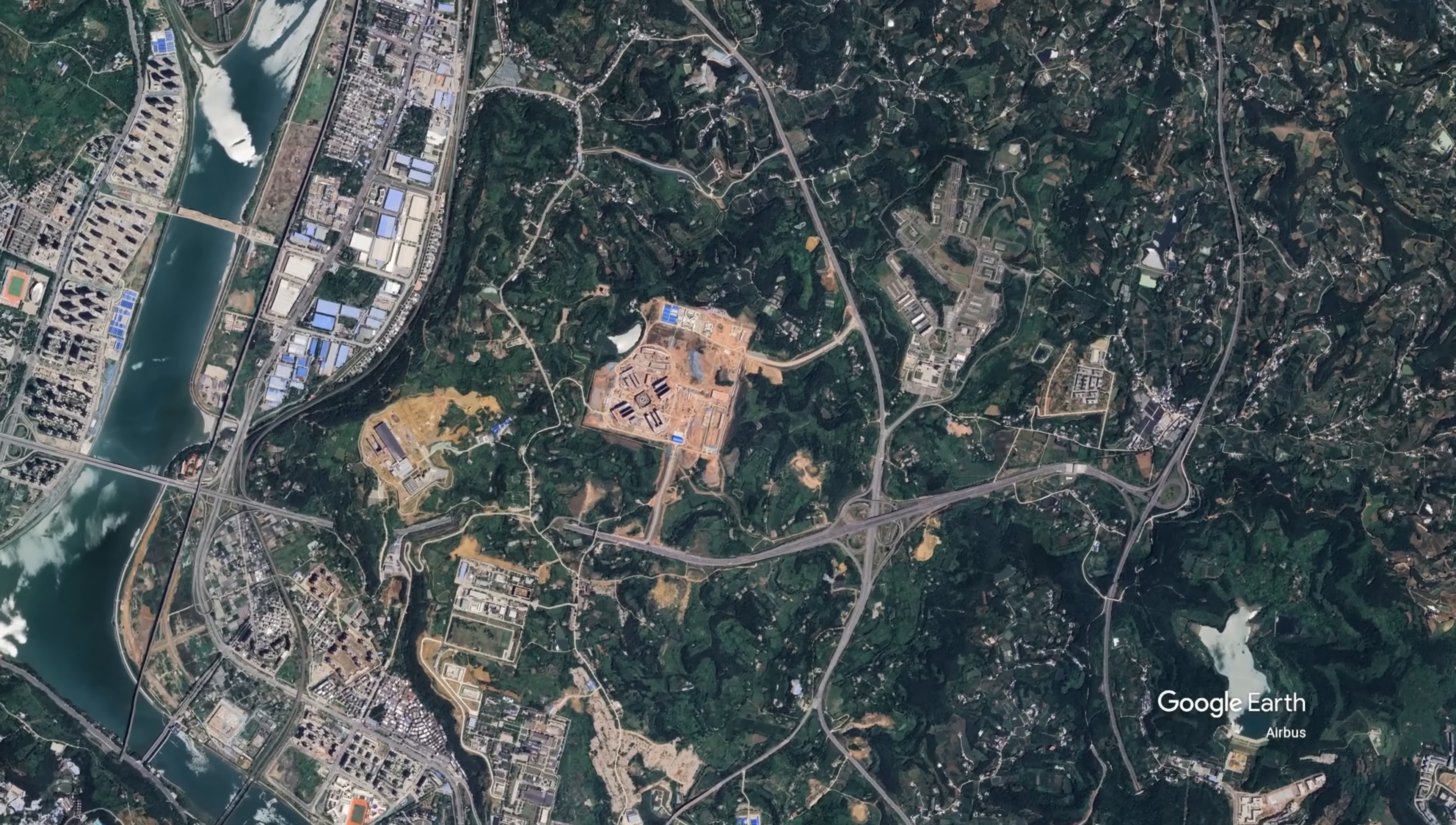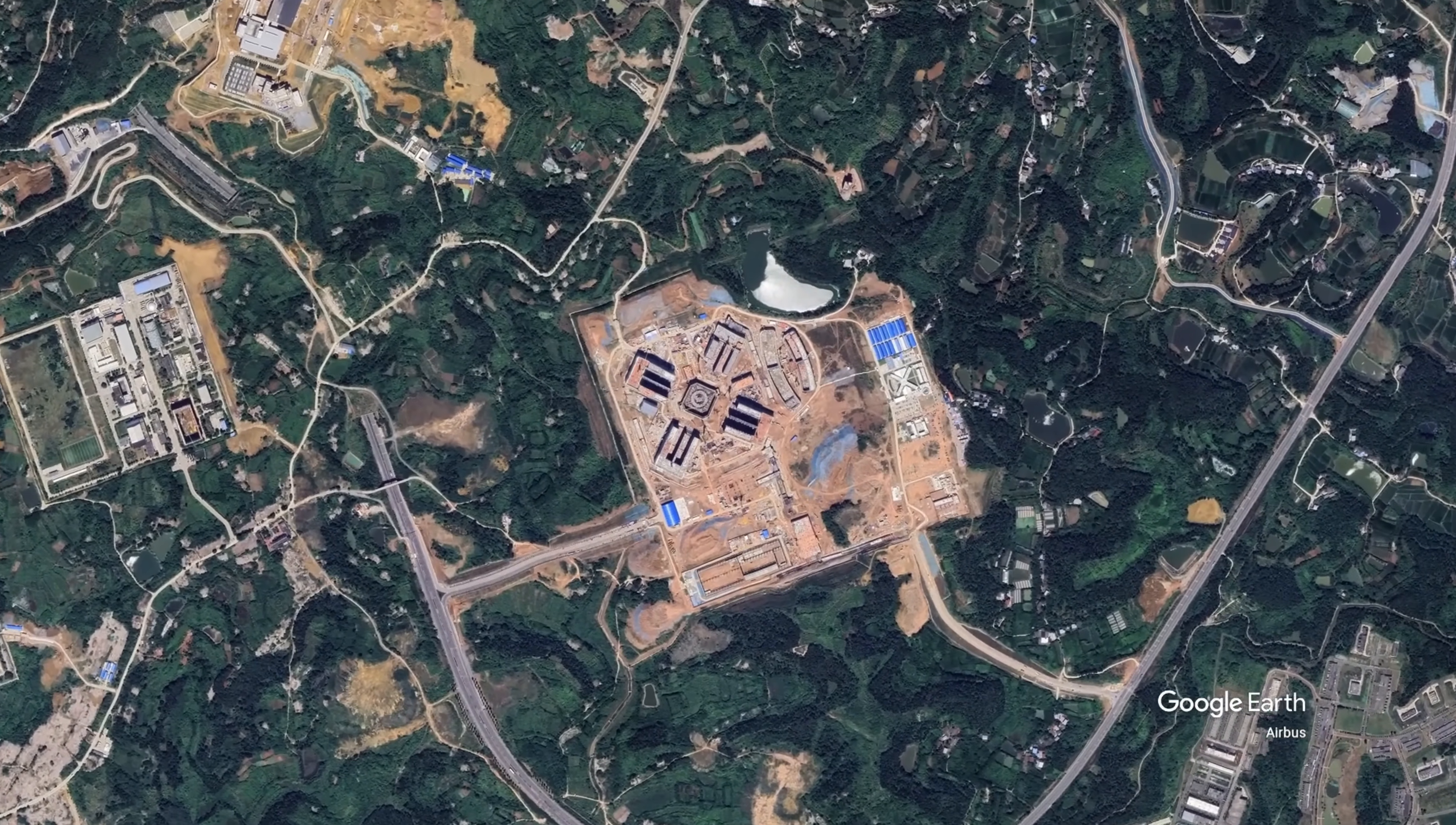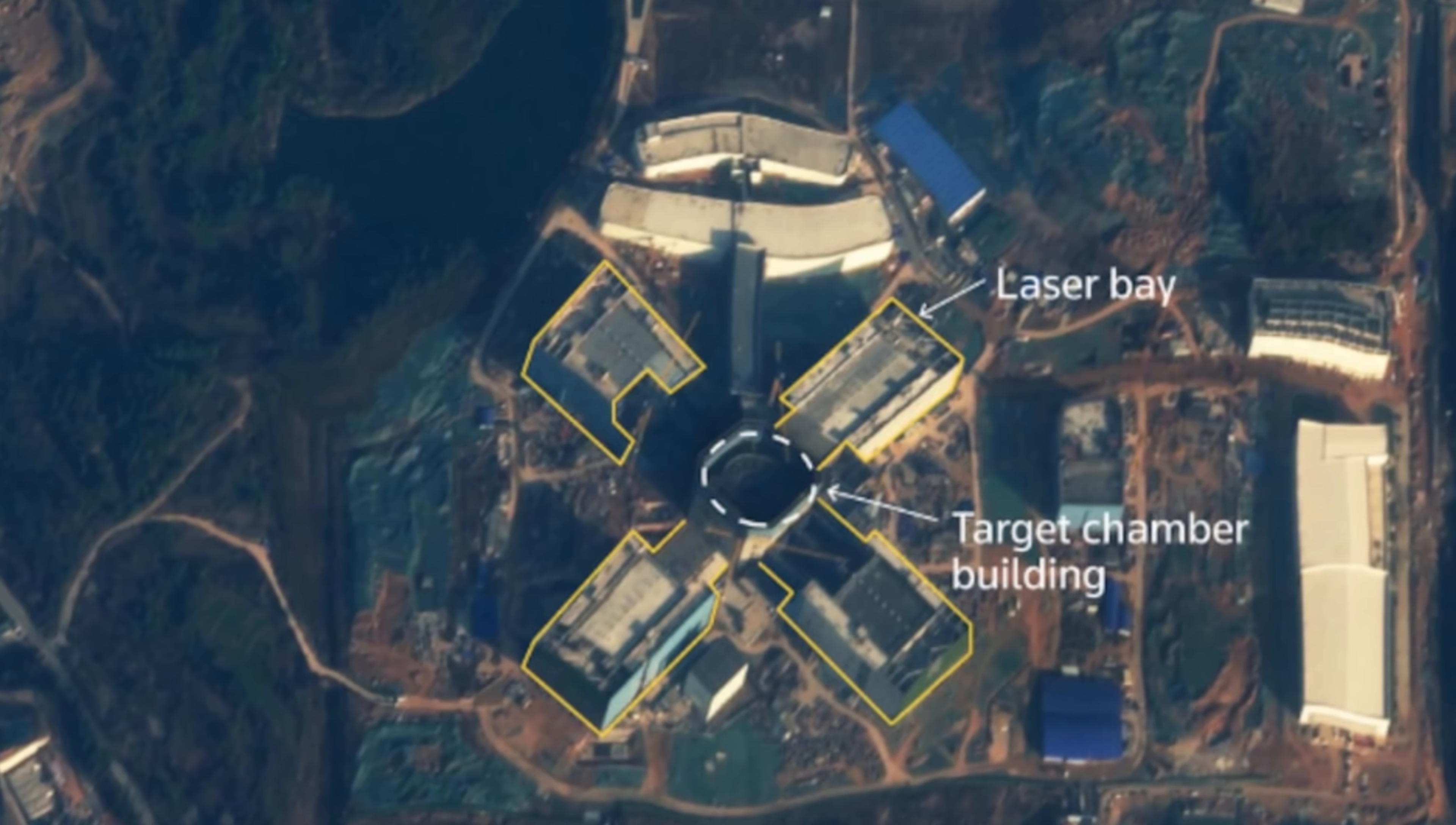Satellite images show a large rectangular structure with four distinct laser bays, each angled toward a central target chamber. Each laser bay is expected to house high power beams aimed at a fuel pellet the size of a pinhead.